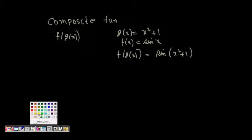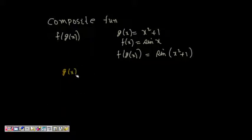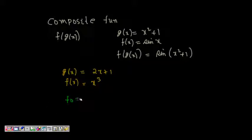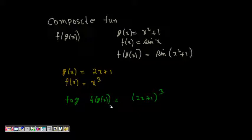One more example: if g of x is 2x plus 1 and f of x is x cubed, then f of g of x means replacing x by g of x in f, so it becomes 2x plus 1, the whole cube. This is the basic idea about composite functions.